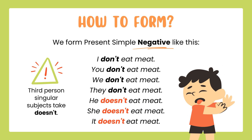For the present simple negative, we use 'do not' or 'does not.' For the third person singular, we use 'does not' or 'doesn't.' For I, you, we, they, and plural nouns, we use 'don't' or 'do not.' Examples: I don't eat meat, you don't eat meat, we don't eat meat, they don't eat meat. For third person singular: he doesn't eat meat, she doesn't eat meat, it doesn't eat meat. Always remember that when we use does/do/doesn't/don't, the verb will always be in its base form.